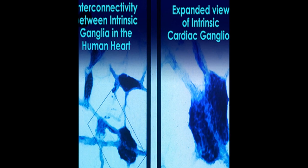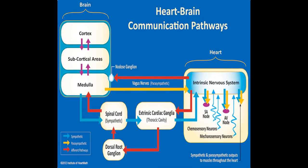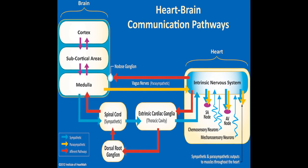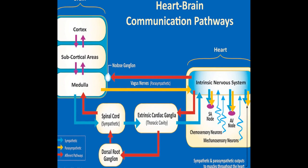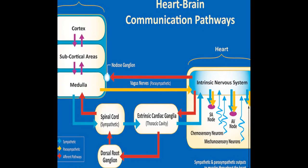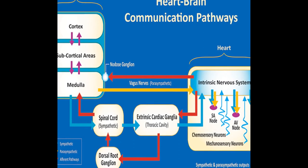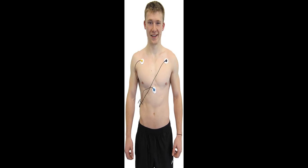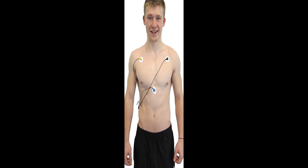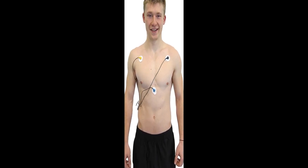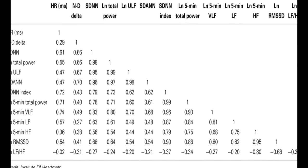Sympathetic and parasympathetic influences on the heart are discussed, along with the interpretation of HRV as a marker of disease risk and loss of regulatory capacity. The article also explores the intrinsic cardiac nervous system and the heart-brain connection, as well as different frequency bands in HRV measurements.